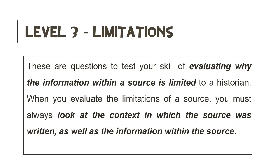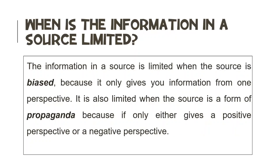Level 3 Limitations questions test your skill of evaluating why the information within the source is limited to a historian. When you evaluate the limitations of a source, you must always look at the context in which the source was written, as well as the information within the source. The information in a source will be limited when the source is biased because it only gives you information from one perspective. It will also be limited when the source is a form of propaganda because it only gives you either the positive perspective or a negative perspective.